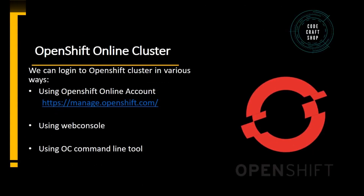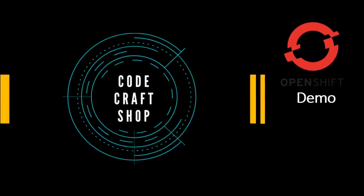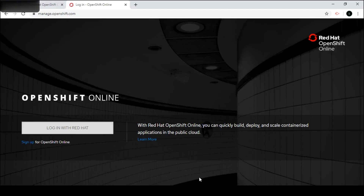We can login to the OpenShift cluster in various ways. One is using the OpenShift online account by logging into manage.openshift.com. We can also login using the web console URL that we receive by email once our cluster is activated. The third way is using the command line tool. In this tutorial we will use the OpenShift online account to log into the cluster.